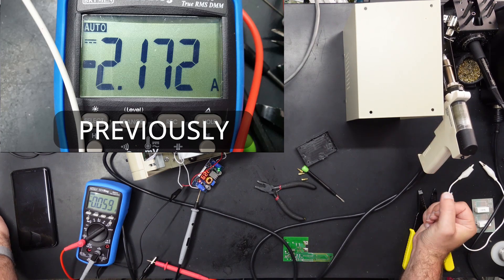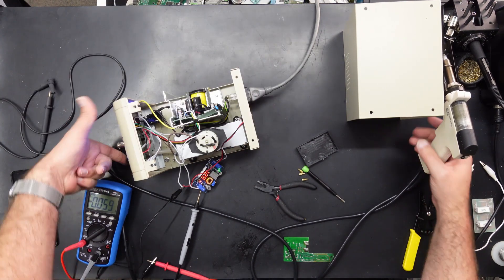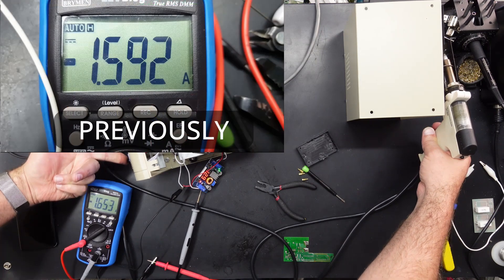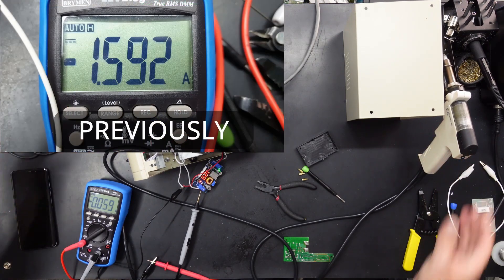So what's the current draw like? 2.37 amps and restricted 1.6.